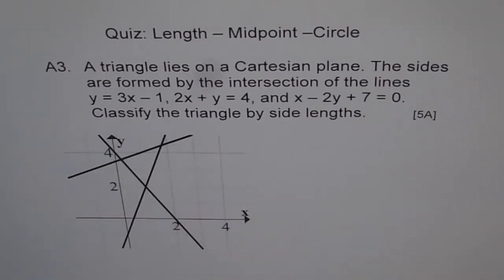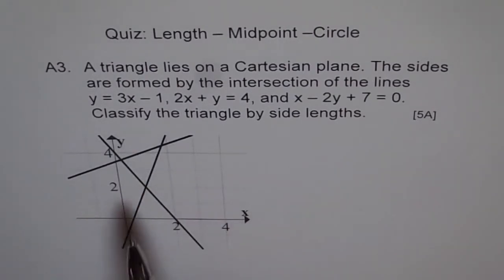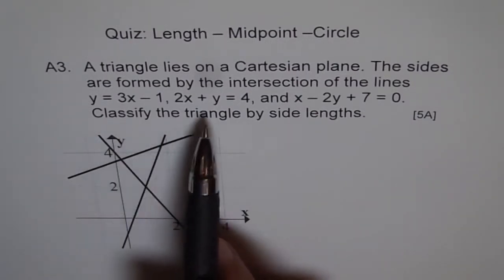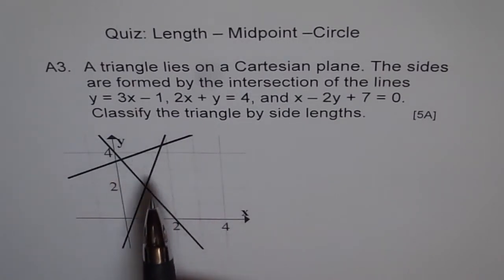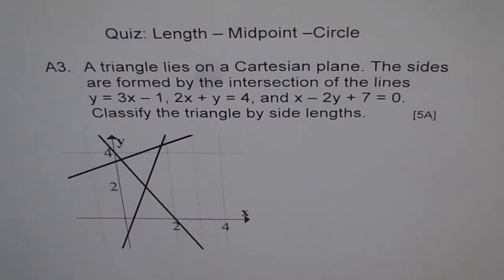Try to do the solution of this problem and then look at my solution. I am not going to solve this problem here but I'll tell you how to solve it. It says there are 3 lines and the triangle is formed by the intersection of these 3 lines. You should simultaneously solve these equations and find the points of intersection. Once you find the points of intersection, you can always find the length of each side, and then classify the triangle.